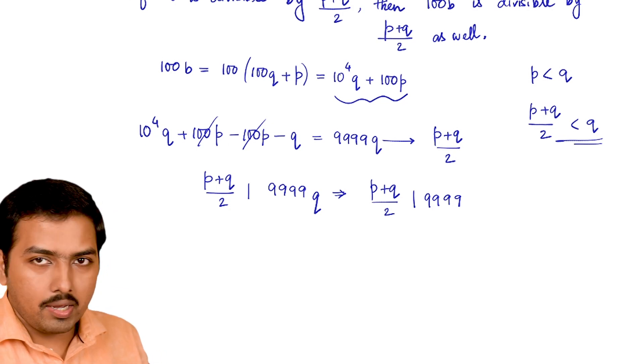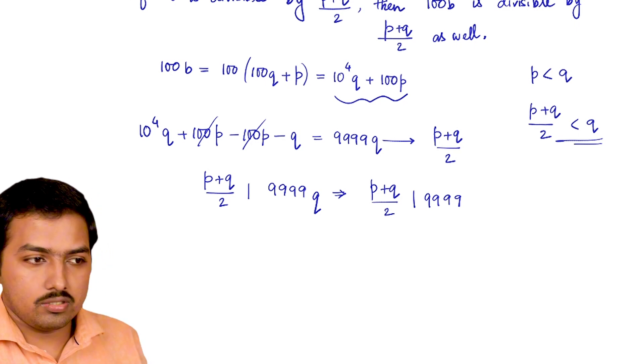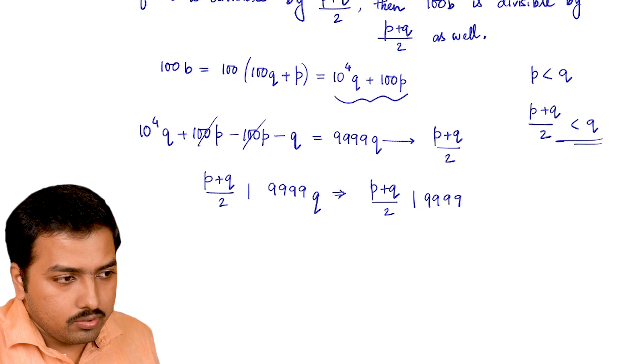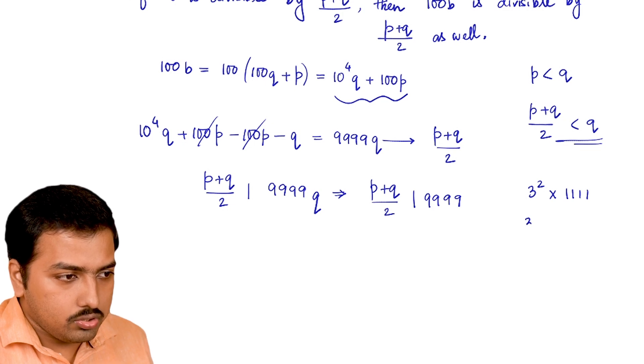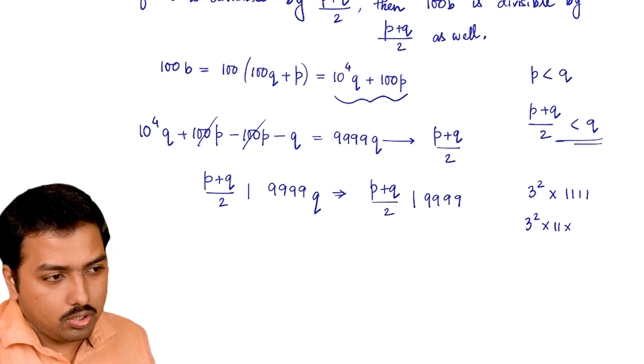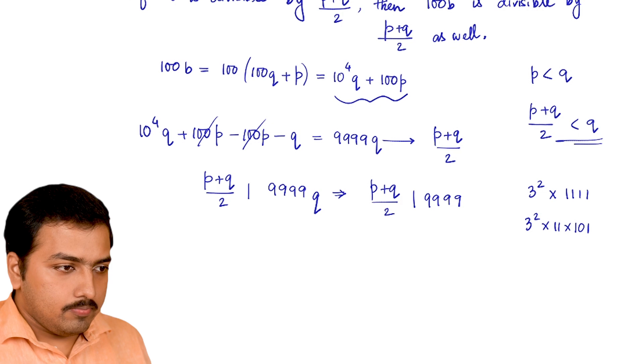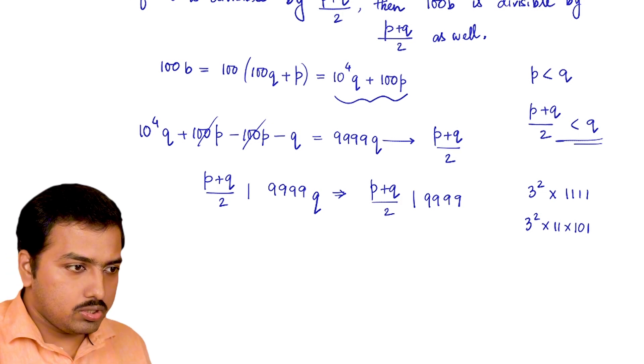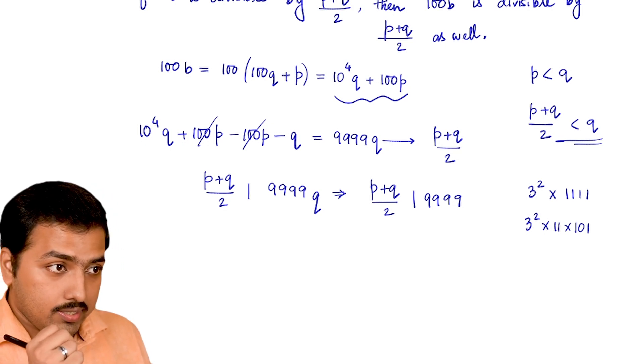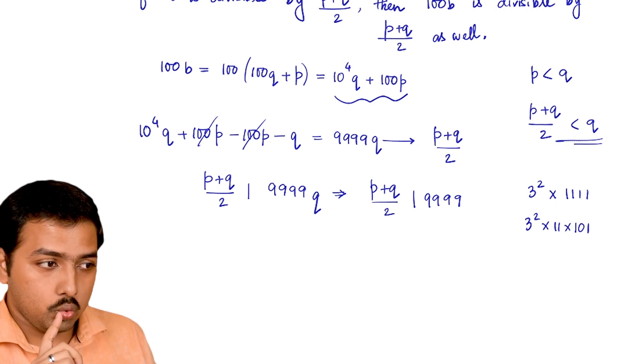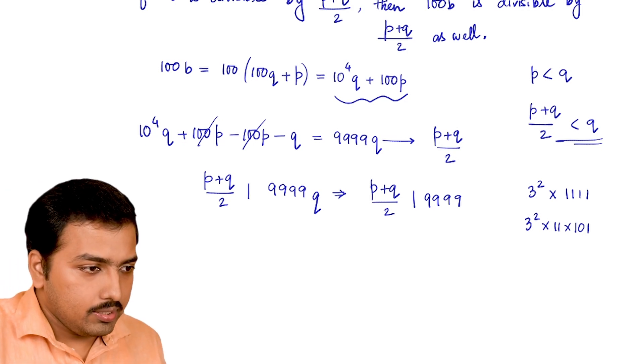Because q being a prime number, what is 9999? This is divisible by 11 for sure and 9 as well. So let's try: 3² times 11 times 101. Now we are almost at the phase of conclusion. So what is going to be (p+q)/2? What are the conditions? Extra conditions we should remember: p and q both of them are two-digit numbers.